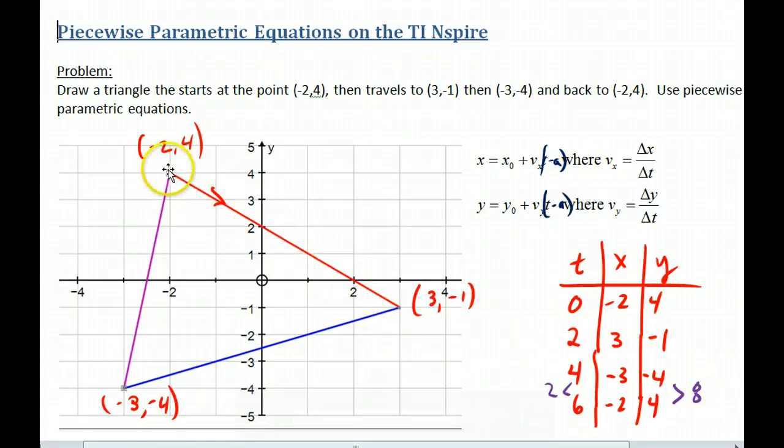Now, the objective is that we want to take, for instance, this triangle, start at negative 2, 4 and go in this direction, 2, 3, negative 1, and then here and here like we're racing around a track and we want to make it continuous.